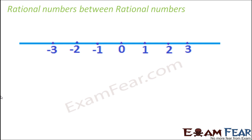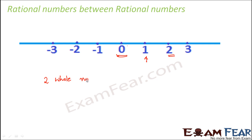If we pick two rational numbers, do rational numbers exist between them? Let's start by looking at the number line. For whole numbers, between 0 and 2 there is only one whole number, which is 1. Between 0 and 50, there are fixed whole numbers from 1 to 49. So between any two whole numbers, there are a fixed number of whole numbers.